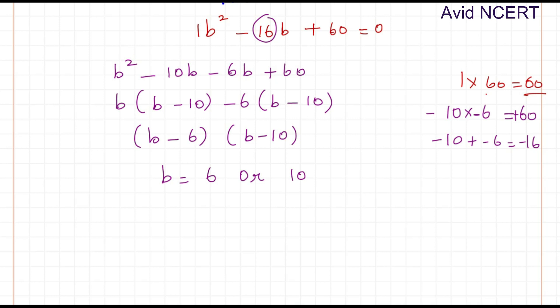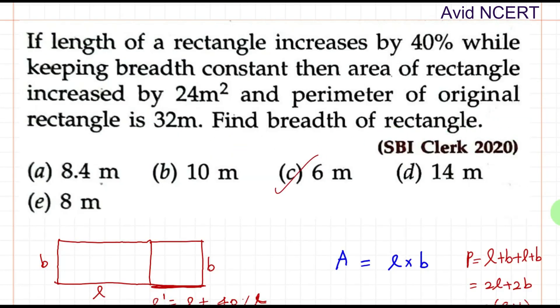Since the breadth will always be the smaller number, B equals 6 meters is the answer. Therefore, the breadth of the rectangle is 6 meters.